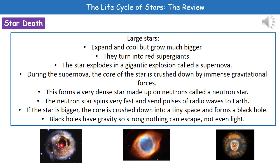The neutron star is spinning very fast and sends pulses of radio waves to Earth, so we can actually pick up these radio waves from neutron stars here on Earth. If the star is even bigger, then the core is going to be crushed down into a tiny space, and it forms a black hole. Black holes have such an immense strength of gravity that nothing can escape — not even light — hence the name black hole.